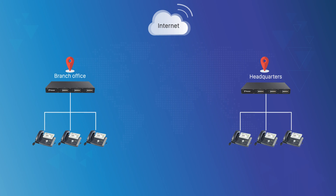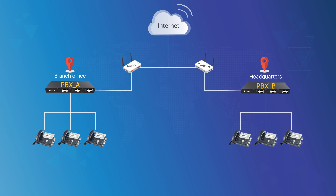Take an example. PBX-A and PBX-B have been deployed in two offices. Here's the topology. On each side, the router is configured with a static public IP address. On PBX-A, all extensions are three-digit numbers starting with number 5. While on PBX-B, there are three digits starting with number 6. To make extensions on each PBX be able to call each other directly, their number ranges are supposed to be different.